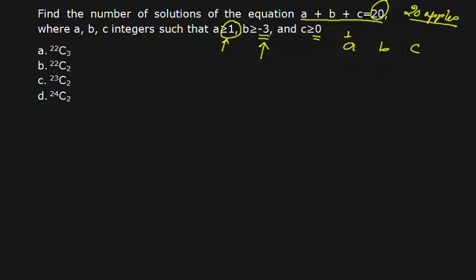So if I have snatched the three apples from b, I am left with 20 plus 3 minus 1 plus 3 because I have snatched from b and minus 1 because I have distributed, I have given one apple to a to make the minimum condition. Now I will be having 22 apples with me and I manage two conditions that a is at least one and b is at least minus three.